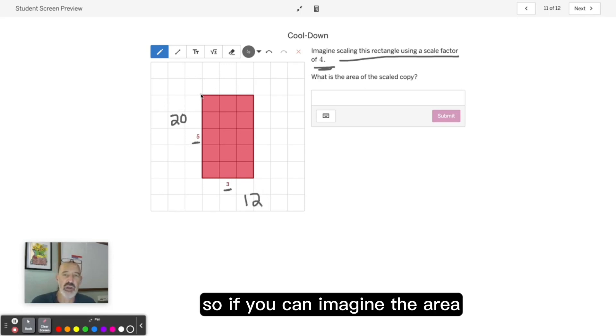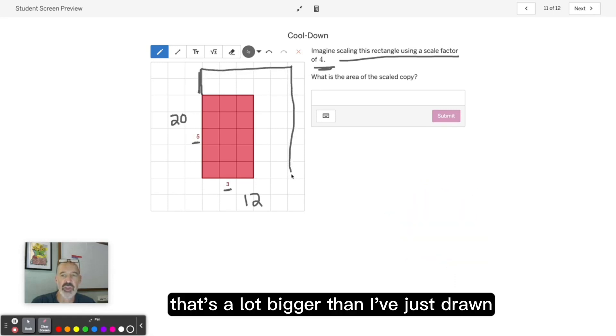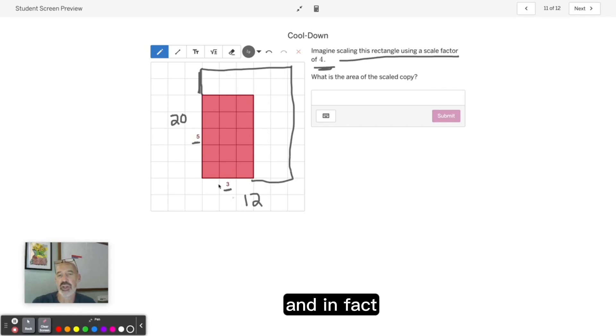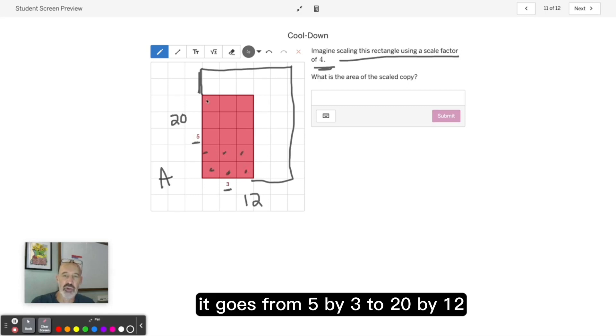If you can imagine the area that grew 4 times taller and 4 times wider, that's a lot bigger than I've just drawn. The area we know is the number of square units. In this case, it goes from 5 by 3 to 20 by 12.